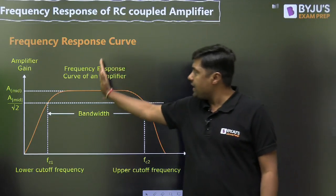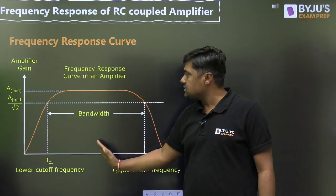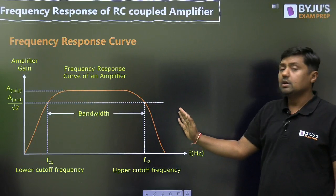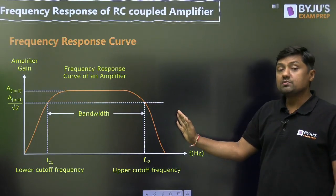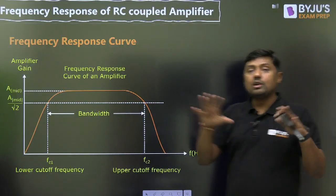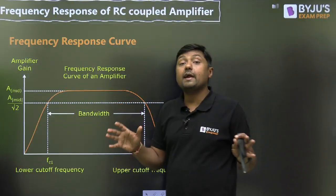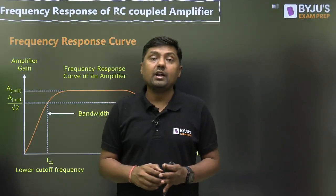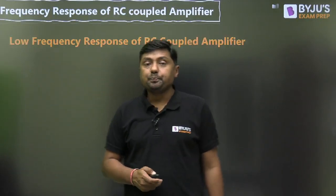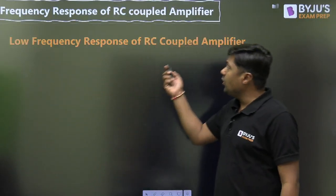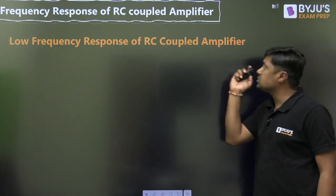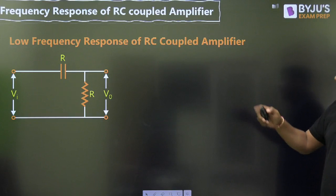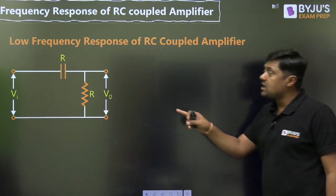We can divide it into two parts: lower frequency — high pass filter; higher frequency — low pass filter. And actually it is a band pass filter. The low frequency response of the RC coupled amplifier acts as a high pass filter.